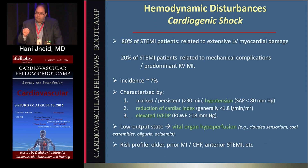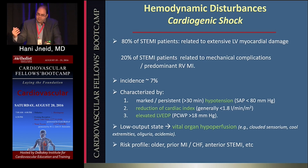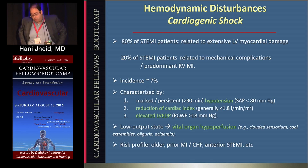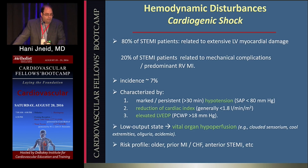The third hemodynamic disturbance is cardiogenic shock. In 80% of acute MI patients, it is related to extensive LV myocardial damage, but in 20% it is related to predominant RV infarct or a mechanical complication. For ST elevation MI, it occurs in the range of 6-8%. For non-ST elevation MI, it is maybe 2-3%. Features include pulmonary edema, hypotension, reduced cardiac index, and organ hypoperfusion — low urine output, clouded sensorium, oliguria, and systemic acidemia.